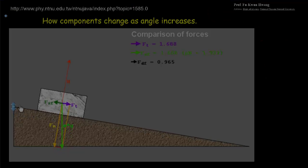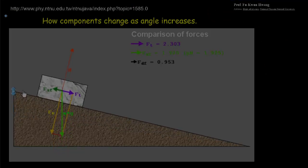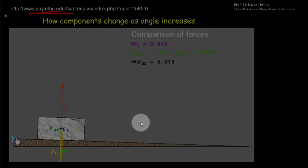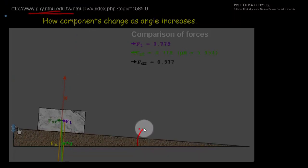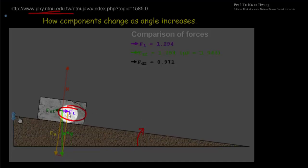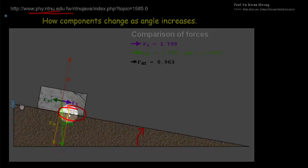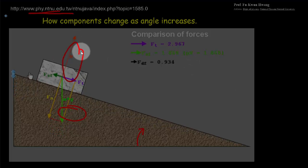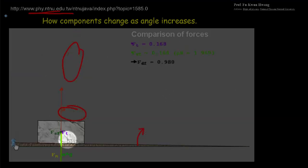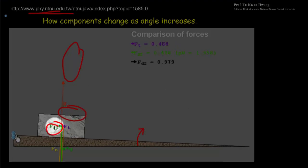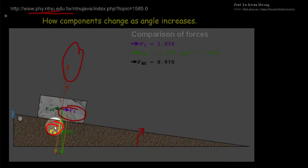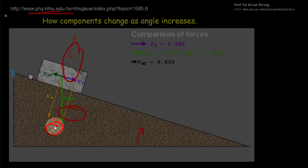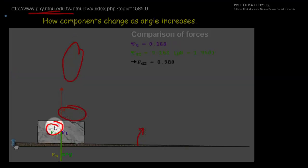This simulation is from Professor Wang at the National Taiwan Normal University — there are lots of great physics simulations at that website. As you increase the angle of the ramp, mg sine theta — the accelerating component of the weight — keeps getting larger, while the normal force keeps getting smaller. Static friction FST is balanced by mg sine theta until it reaches its limit, at which point mg sine theta wins out and the block begins to slide down the ramp.